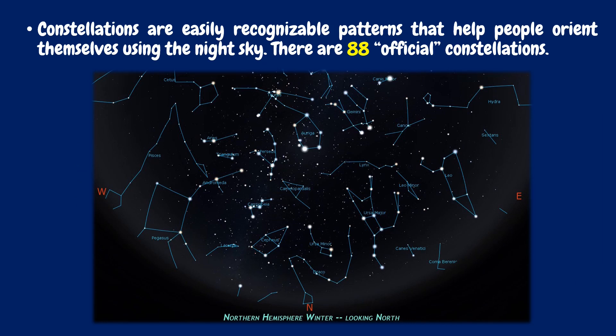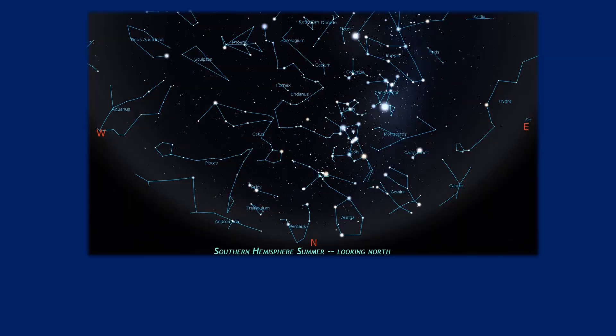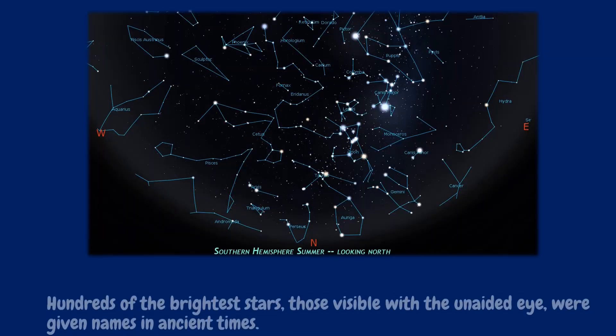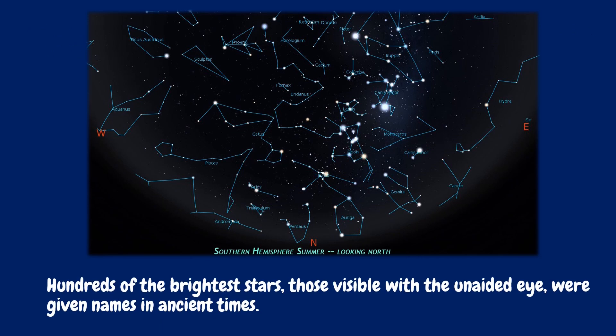Constellations are easily recognizable patterns that help people orient themselves using the night sky. There are 88 official constellations. Hundreds of the brightest stars — those visible with the unaided eye — were given names in ancient times.